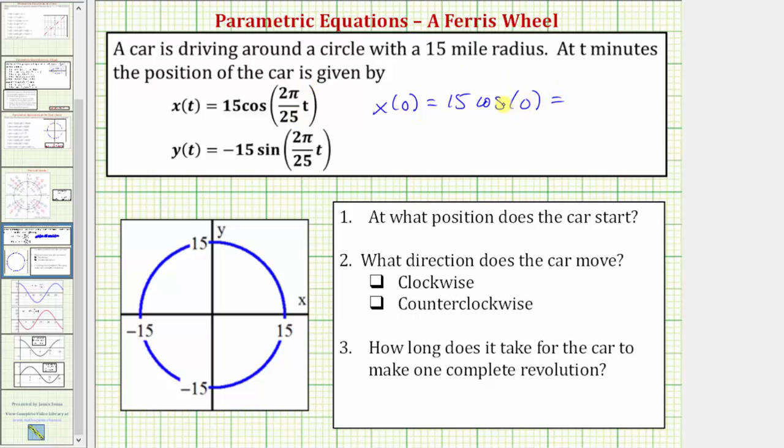Cosine zero is equal to one, which means the x-coordinate of the starting position is positive 15, and now to find the y-coordinate, we need to find y of zero,